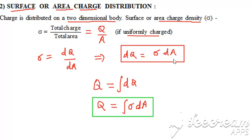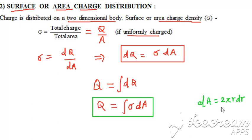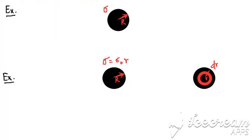For the radially symmetrical case, dA can be written as 2πr dr. This expression for 2πr dr applies to radially symmetrical charge distributions, allowing us to convert the integration into a solvable format. Let's take an example for that purpose.